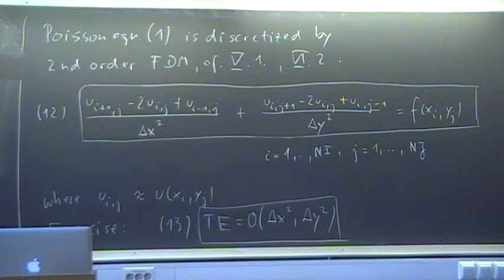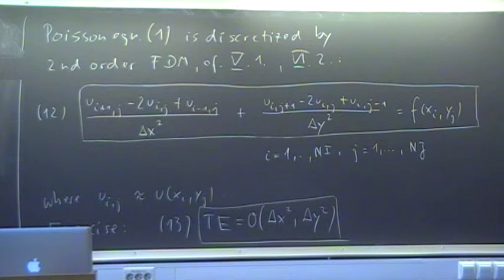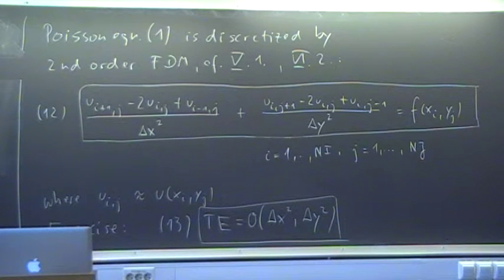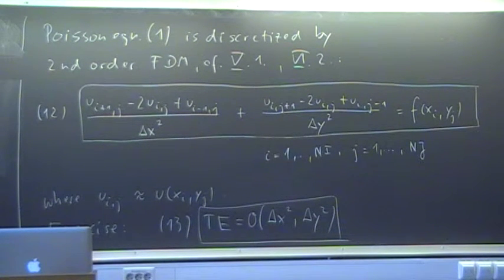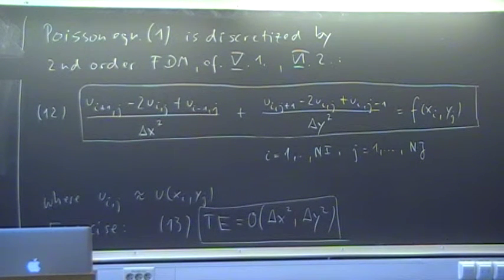Having a second-order method implies that when we refine the grid — that is, when we take delta x half and delta y half — the error should go down quadratically. One half to the power 2 is one quarter. So the error with a refined grid, half the grid size, should be one quarter of the original error.